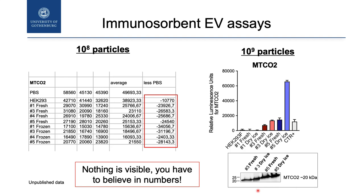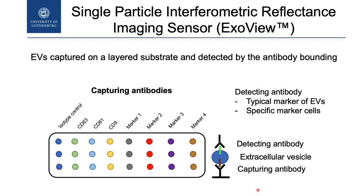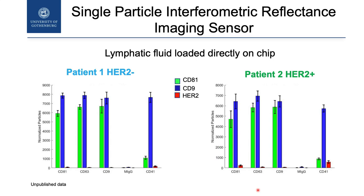Another sort of sophisticated ELISA we can run is the single particle interferometric reflected image sensor — commercially called ExoView. It's a sort of sophisticated ELISA: we have a chip with antibodies on the surface, we load the vesicles, and then we have a secondary antibody that we can detect. Very simple, but the beauty of this is that the vesicles are visible on the chip.